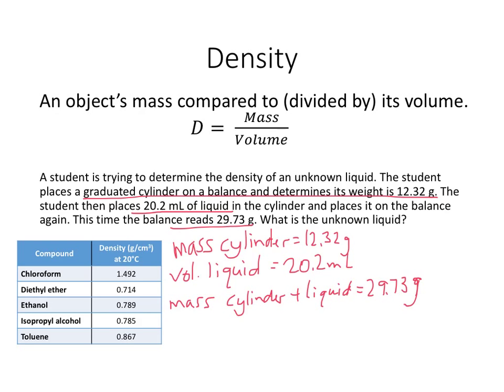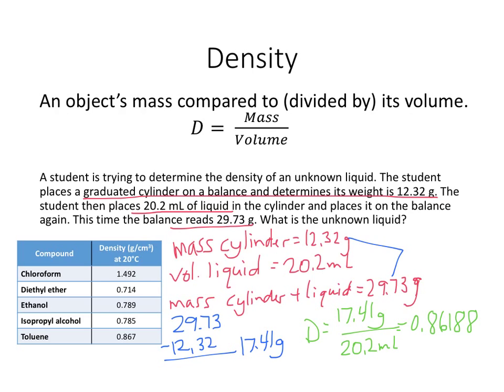So what we're going to have to do is subtract the two masses from each other to figure out the mass of just the liquid. 29.73 minus 12.32 is equal to 17.41 grams. Two places past the decimal gives me my correct number of significant figures. Then the density is equal to the 17.41 grams divided by 20.2 milliliters gives me 0.86188 which is close to 0.862. Notice that on my list I don't have anything that's 0.862, but I do have one that's really close to that. So my guess is that this is going to be toluene.